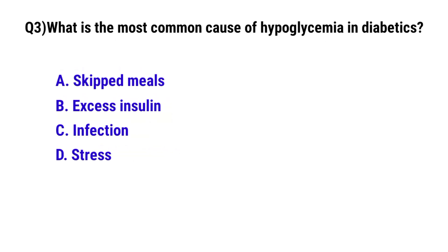Question No. 3. What is the most common cause of hypoglycemia in diabetics? The correct option is B: Excess insulin.